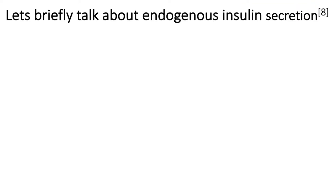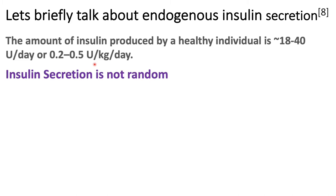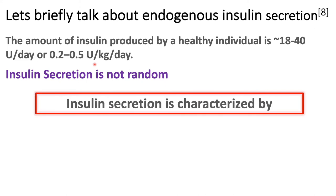Let's briefly talk about endogenous insulin secretion — that is, our own pancreas secreting insulin. The amount of insulin produced by a healthy pancreas is 18 to 40 units per day, or 0.2 to 0.5 units per kg per day. Insulin is not randomly secreted; it's secreted in a manner that keeps blood glucose levels in check, with background basal secretion and also peaks.